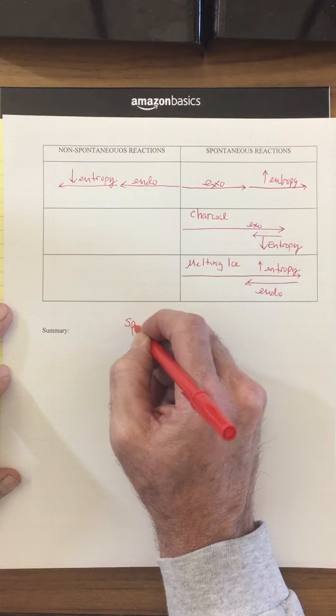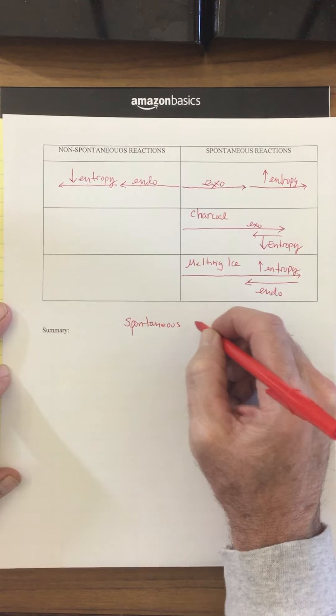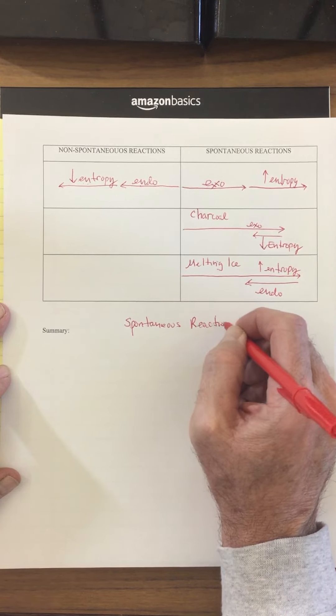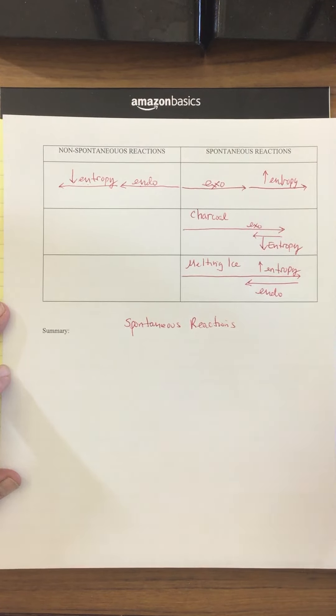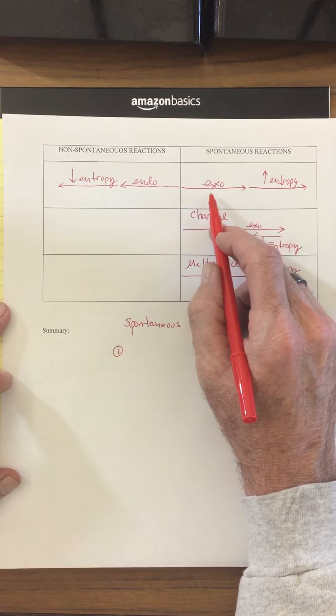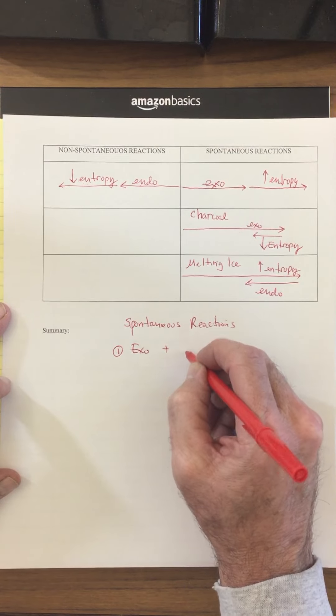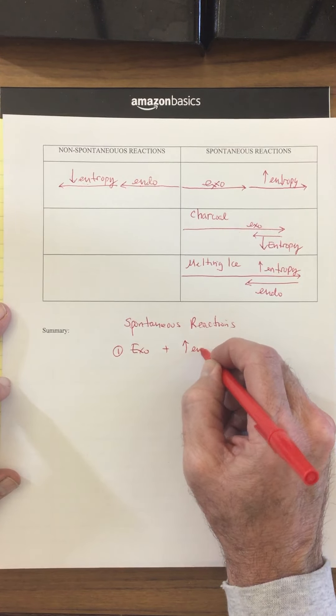So what creates a spontaneous reaction? What makes a reaction go forward? There are three things right here. Number one, the first factor is when you have exothermic and when you increase your entropy.